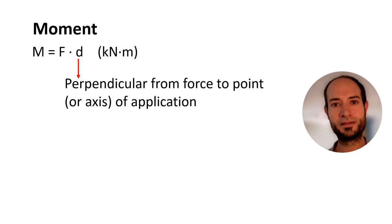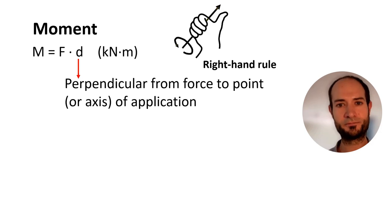And to know if it's a positive or negative moment, remember the right hand rule. We just follow the load with your fingers and then around the load, and the thumb points in the direction of the moment. If it's a rotation anticlockwise, it will be positive. If it's clockwise, negative.